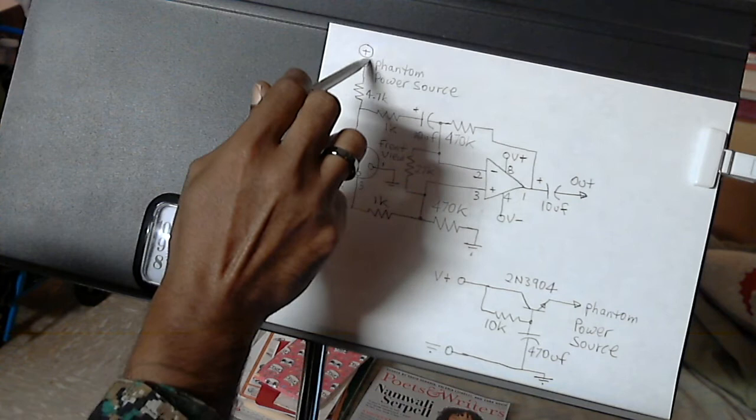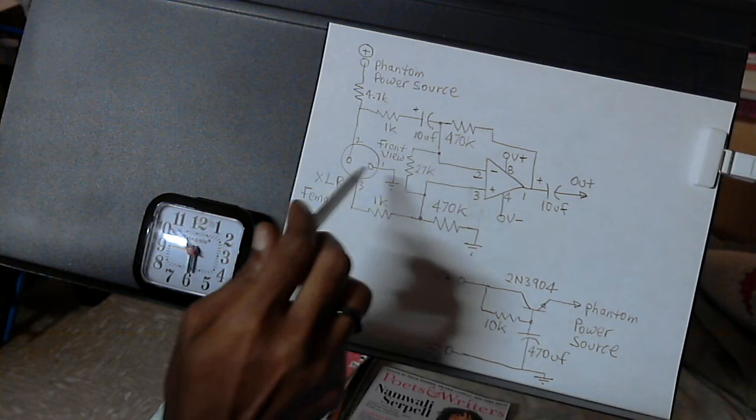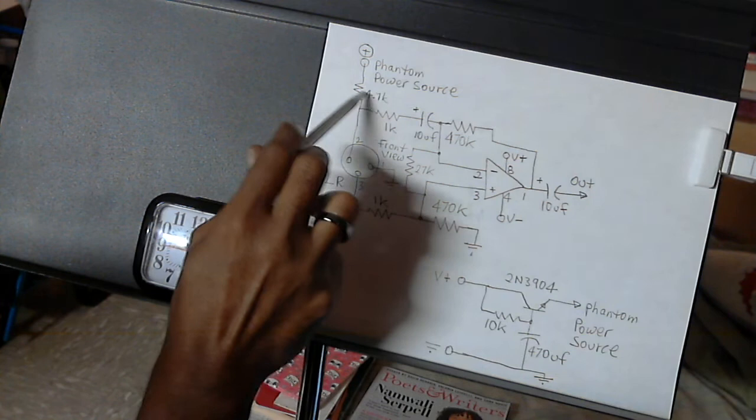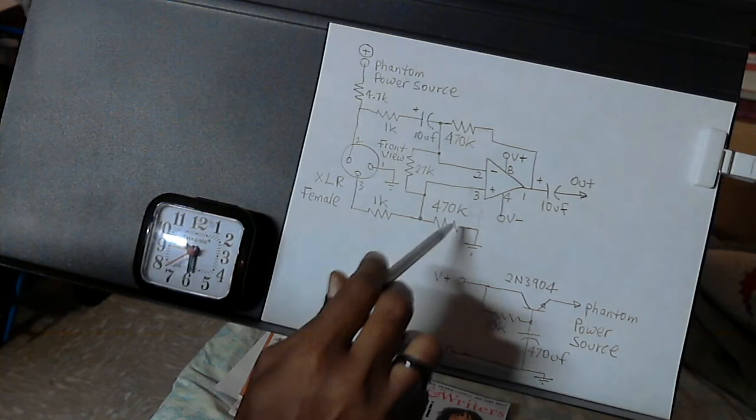Here would be connected to here, and this is the front view of the female jack, XLR jack. This is 4.7k ohms, this is 1k ohms, this is 1k ohms.